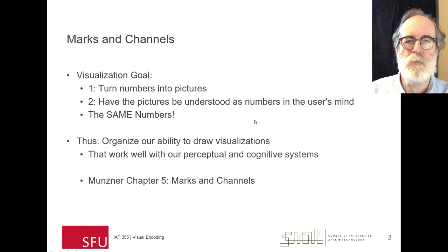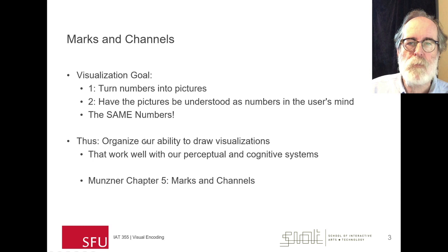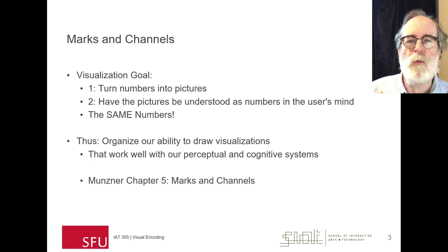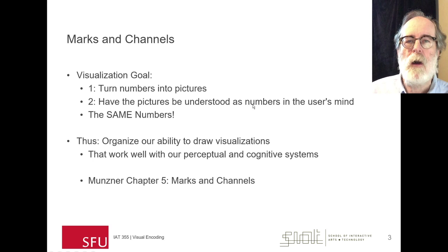Our ability to draw visualizations needs to work well with our perceptual and cognitive systems. In the previous two lecture chunks, Lectures 5 and 6, we talked at some length about perception. In Tamara Munzner's Chapter 5, she speaks of these concerns at the end of the chapter. Lectures 5 and 6 are focused in a bit more depth on the stuff that happens at Chapters 5.5 and beyond. Now we're going to talk about the first part of her work in Chapter 5.